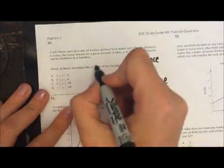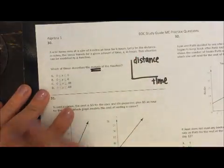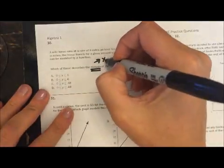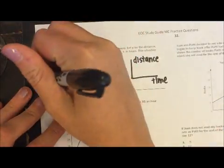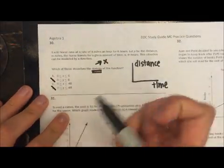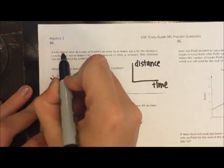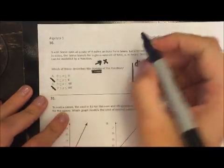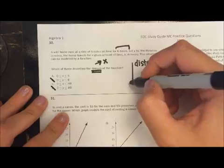Okay, so which of these describes the domain of the function? Well, we know that domain is x values, so we can go through and cross out all my y values because we're talking about domain. And then we can see it says a wild horse runs at a rate of 8 miles an hour for six hours. My time limit is six hours.